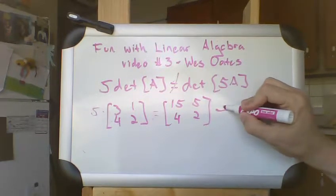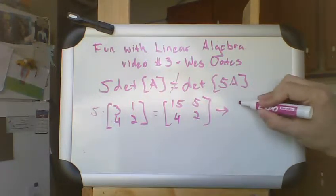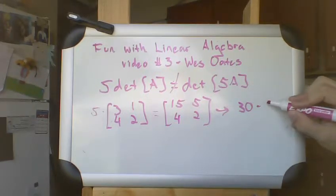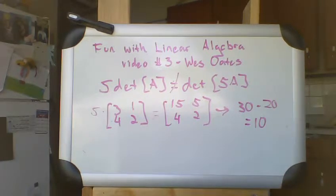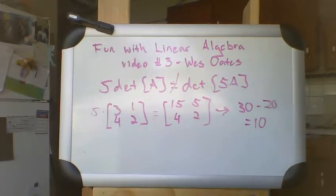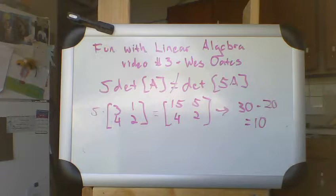And the determinant of that is going to be 30 minus 20, which is equal to 10. So as it turns out, you may recall that the determinant the first time around was 2. This, as it turns out, is exactly 5 times that amount.